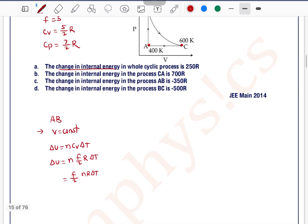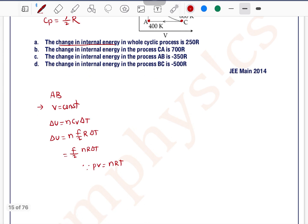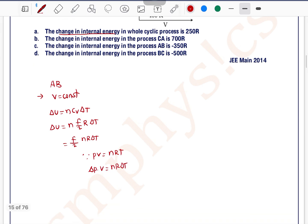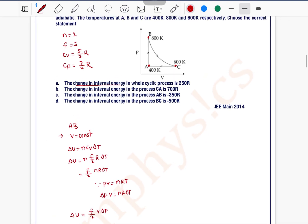From the ideal gas equation, we know PV equals nRT. If we differentiate this term, we will get change in pressure into volume equals nRT into change in temperature. Put in above equation, so delta U equals F by 2 V into delta P. F is 3, so 3 by 2 V. What is the volume?